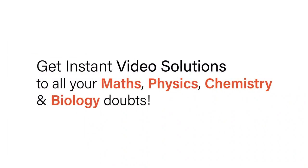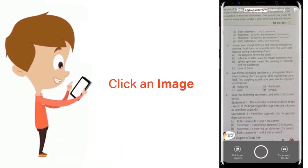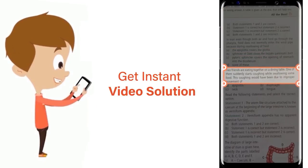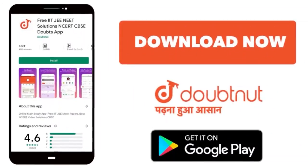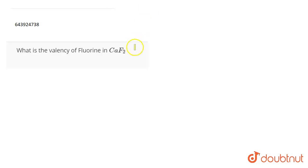With Doubtnet, get instant video solutions to all your maths, physics, chemistry and biology doubts. Just click the image of the question, crop the question and get instant video solution. Download Doubtnet app today. The question is: what is the valency of fluorine in CaF2?